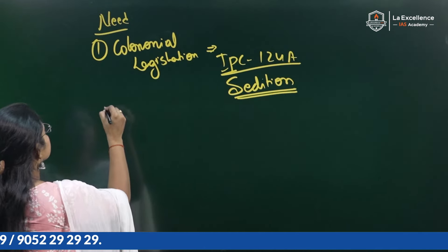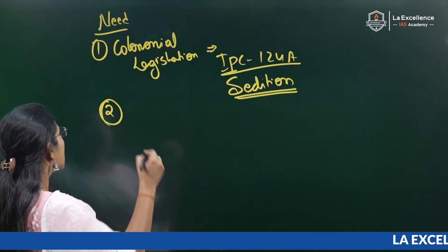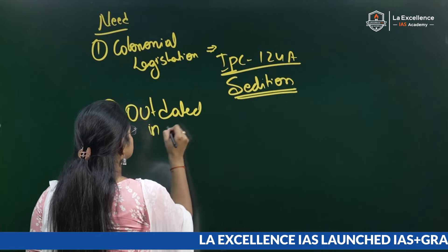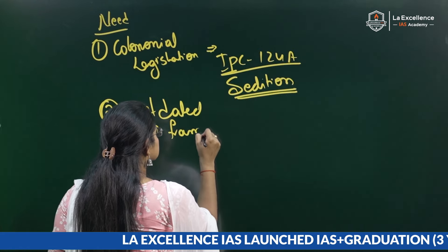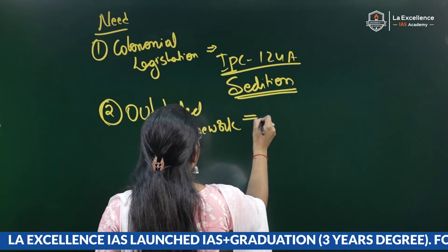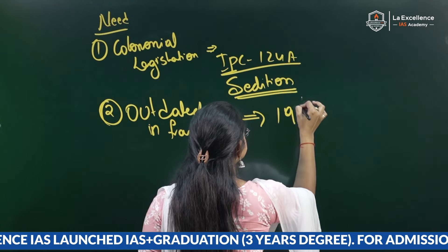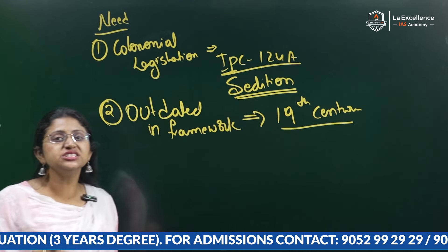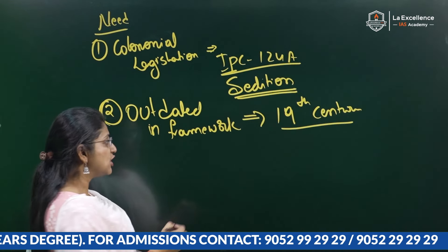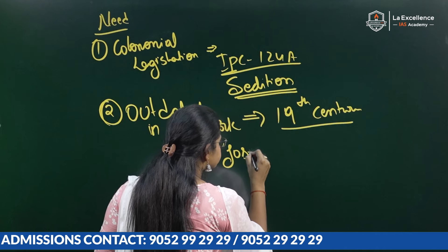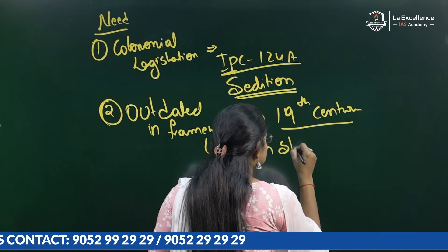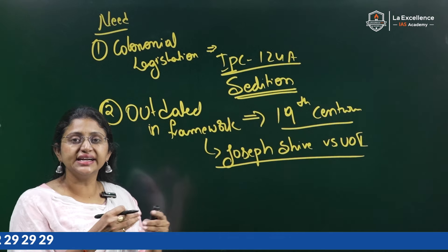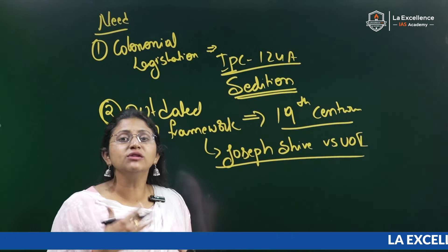The second reason is that most of these legislations are outdated in framework. These laws were made in the 19th century and do not align with contemporary social situations. For example, in the Joseph Shine v. Union of India case, the Supreme Court of India decriminalized adultery, which shows there is an evolving need for justice.